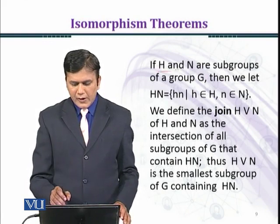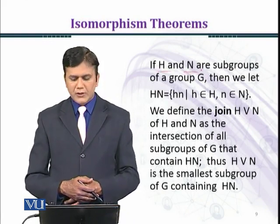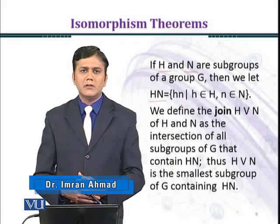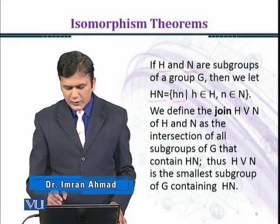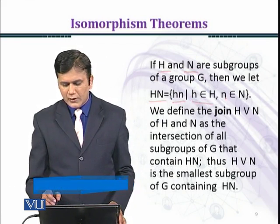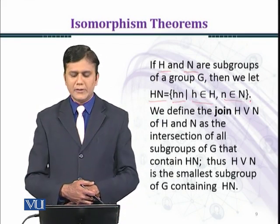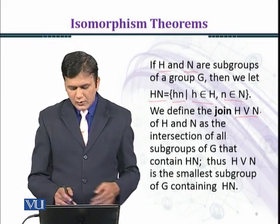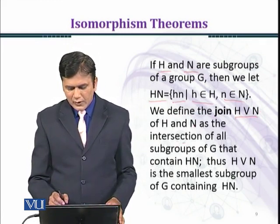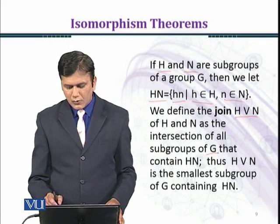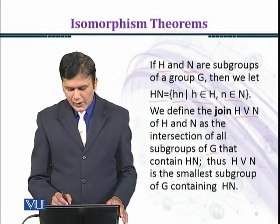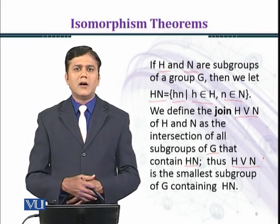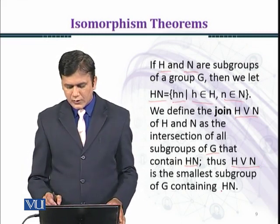If H and N are subgroups of a group G, then we let HN — the product of H with N — equal to the set {hn : h ∈ H, n ∈ N}. We define the join H∨N of H and N as the intersection of all subgroups of G that contain H and N. Thus H∨N is the smallest subgroup of G containing H and N.